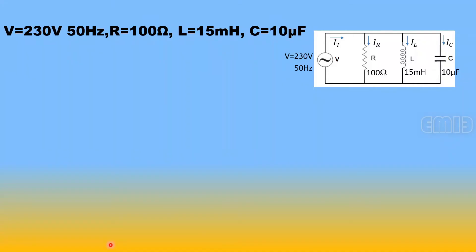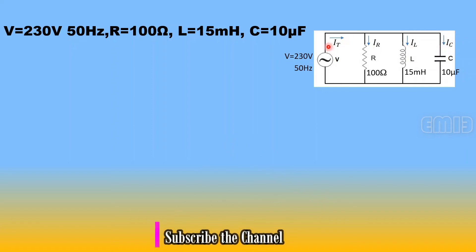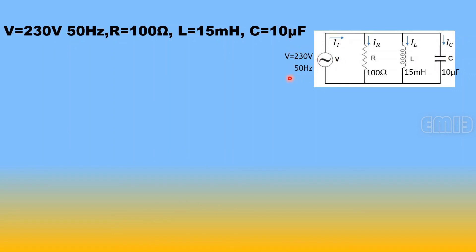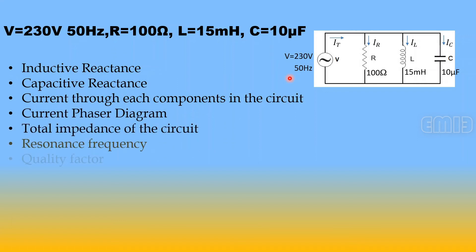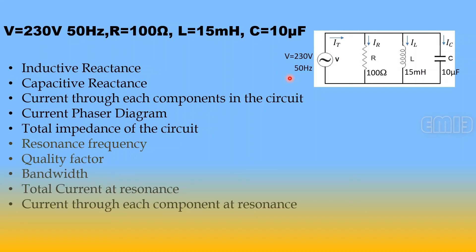Now consider a problem with a parallel RLC circuit: resistance R = 100 Ω, inductance L = 50 mH, capacitance C = 10 µF, applied voltage 230 V at 50 Hz. We will find: inductive reactance, capacitive reactance, current through each component, the phasor diagram, total impedance, resonant frequency, quality factor, bandwidth, total current at resonance, and currents through each component at resonance.